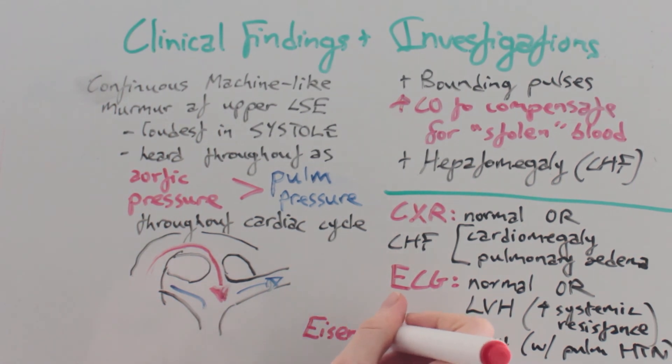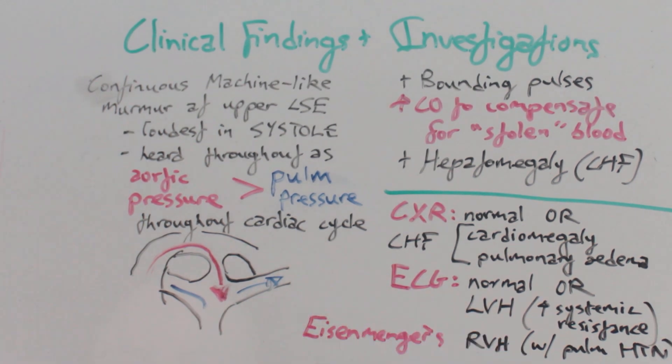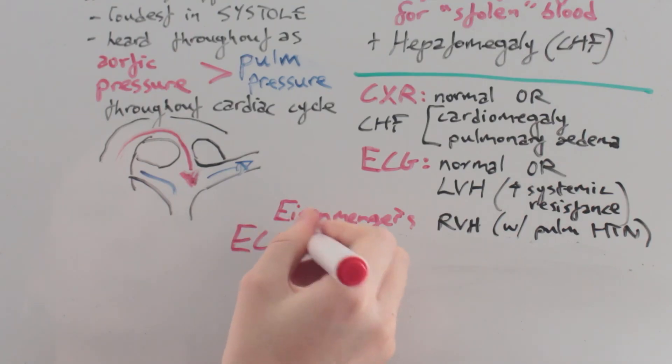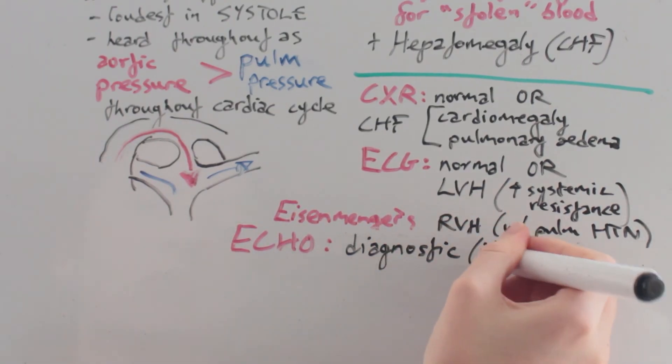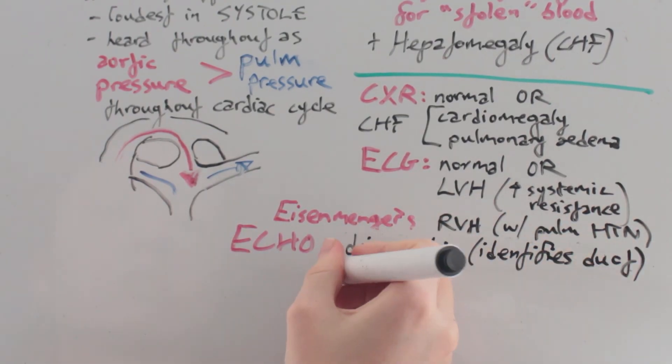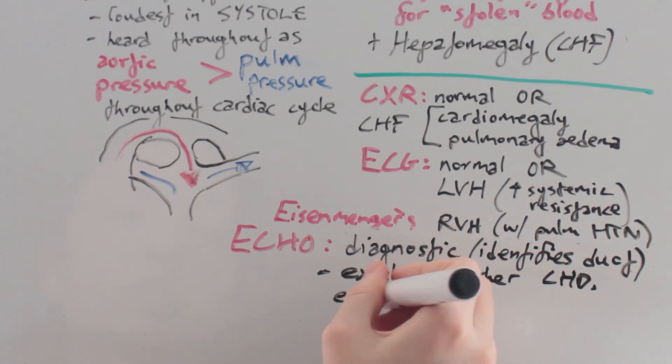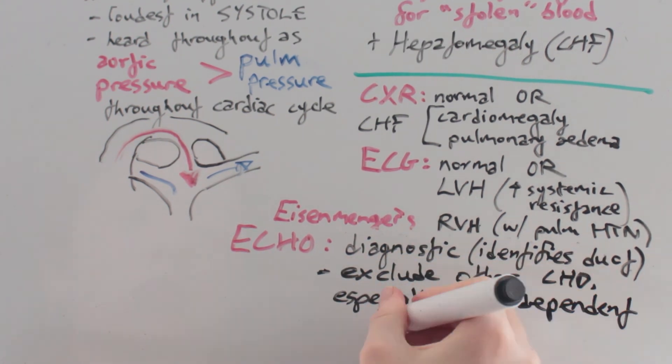Long term, this can lead to shunt reversal and Eisenmenger's syndrome. Echocardiogram is diagnostic as it identifies the duct and is able to exclude other congenital heart diseases, especially duct-dependent lesions.